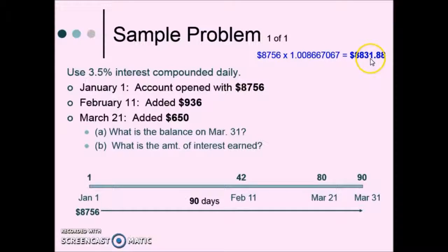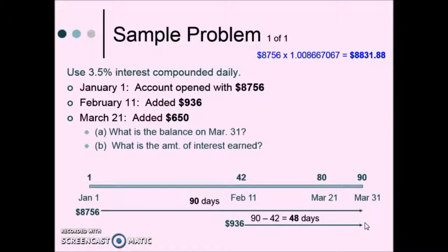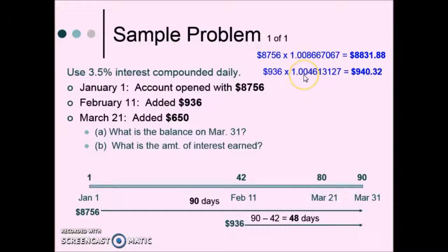This gives us the balance after 90 days for just that first deposit. Then we move to the February 11th deposit. This money sits in the account from February 11th until March 31st — that's 48 days. To calculate the interest earned on that amount, we look up 48 days in our table to find the multiplier, then multiply it by that deposit, which only sits in the account for 48 days, giving us its ending balance.